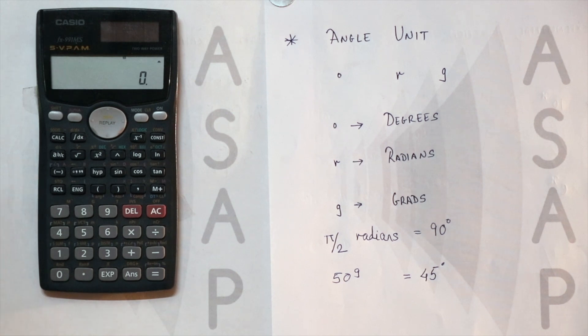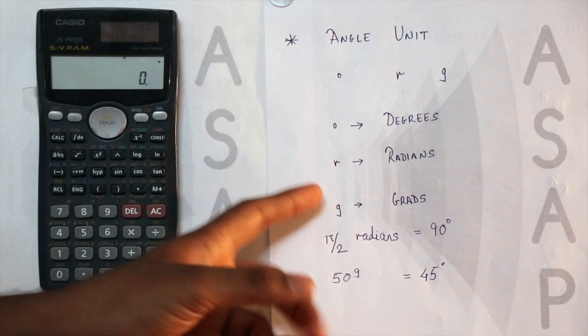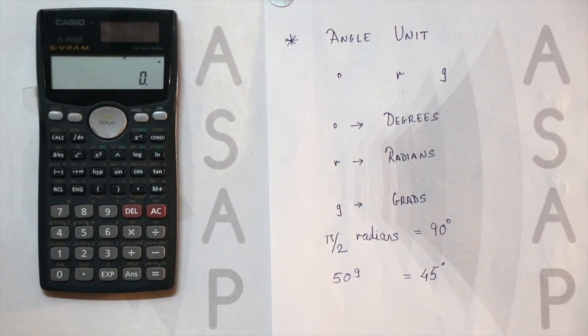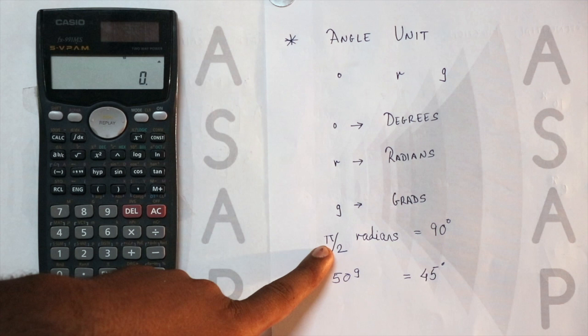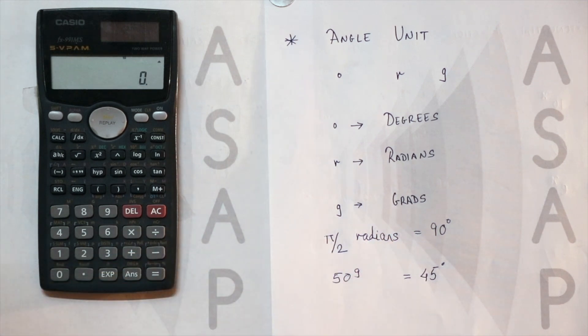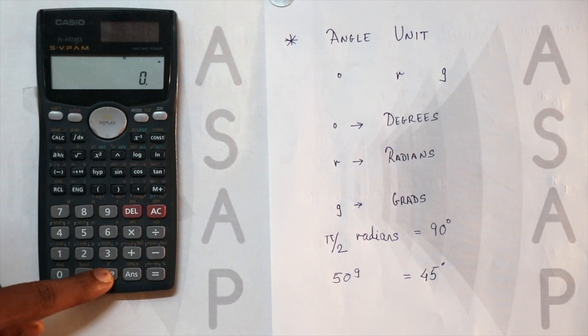I'll show you how to use them. For example, I have taken an example: PI by 2 radians. First thing you have to find is where PI is located. Here you can see PI is above the button EXP.